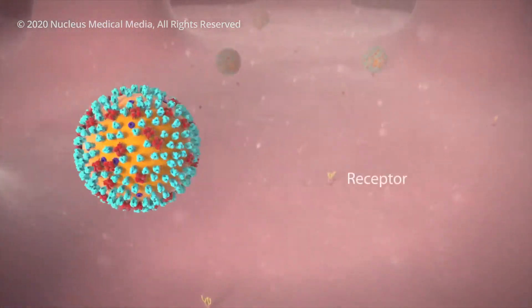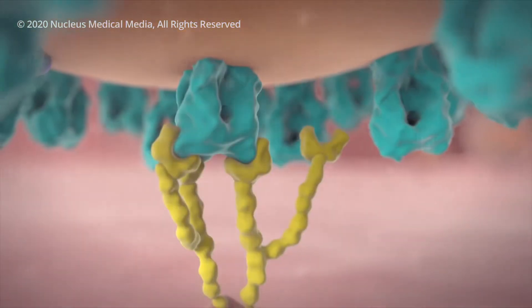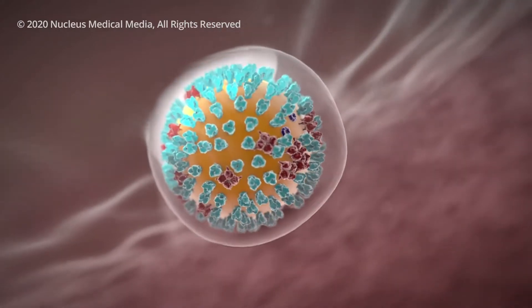One spike on the virus inserts into a receptor molecule on your healthy cell membrane like a key in a lock. This action allows the virus to get inside your cell.